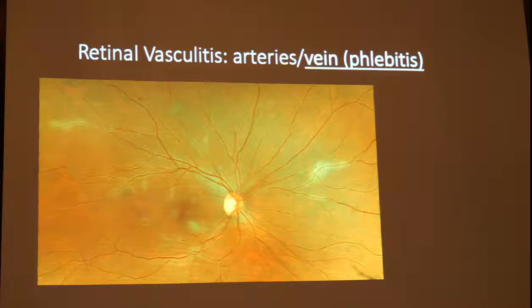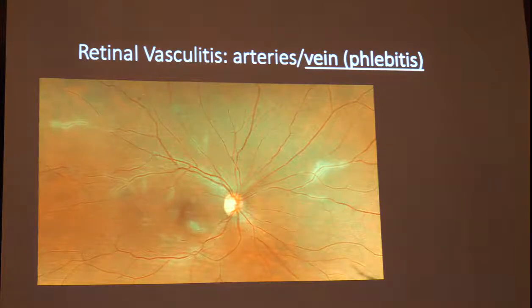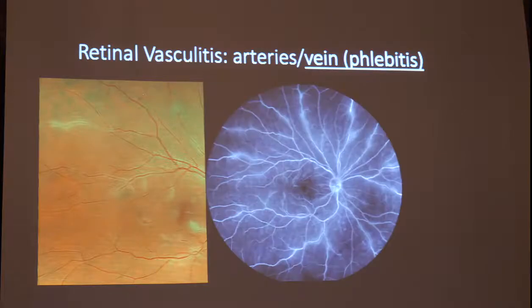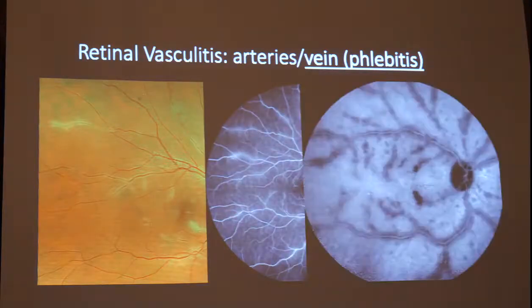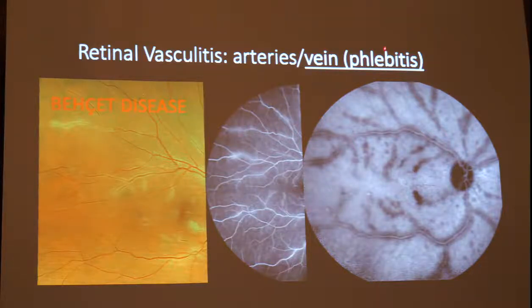On the other hand, you may have a venous vasculitis — a phlebitis. This is a patient who came with very marked venous sheeting, and you can see very clearly from the fluorescein angiography and ICG. This is a case of Behcet disease with very prominent venous involvement.